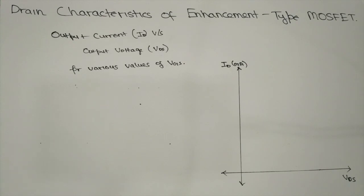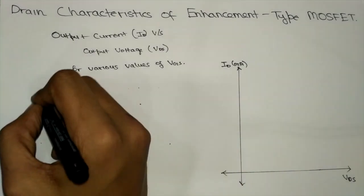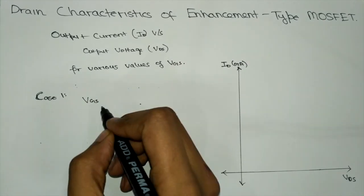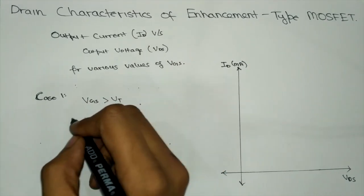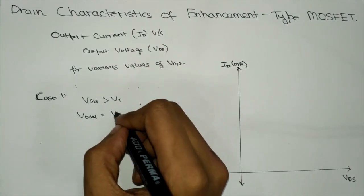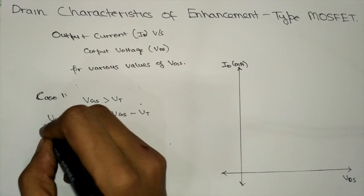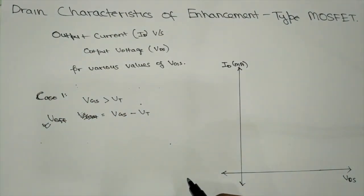As VDS is increased, the ID value also increases. When VGS is greater than the threshold voltage, there are three cases. Case one is when VGS is much greater than the threshold voltage. The width of the N channel would be determined by V_effective, which is given as VGS minus VT. This V_effective determines the width of the N channel.